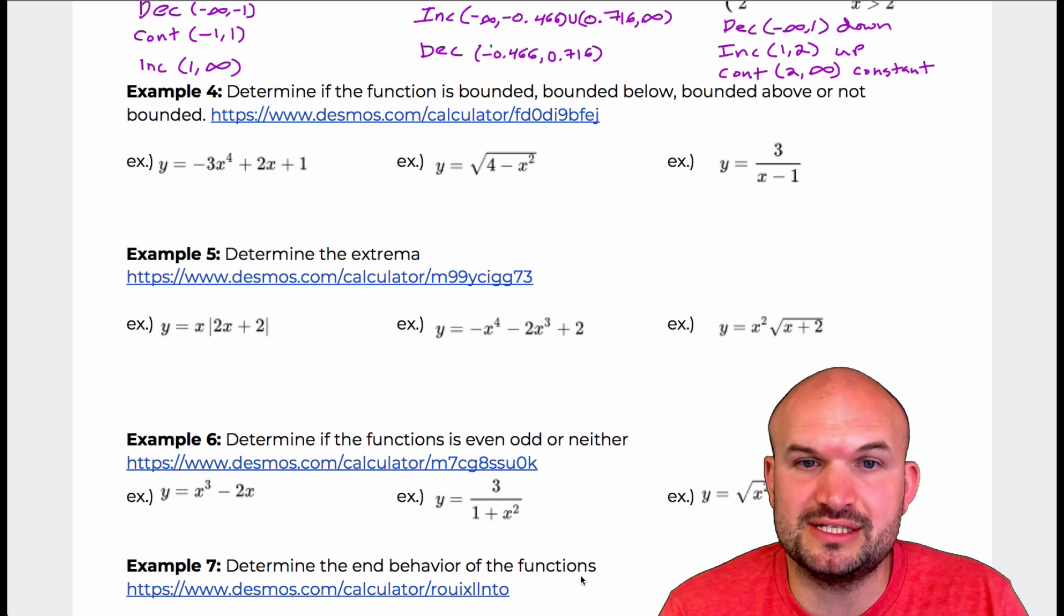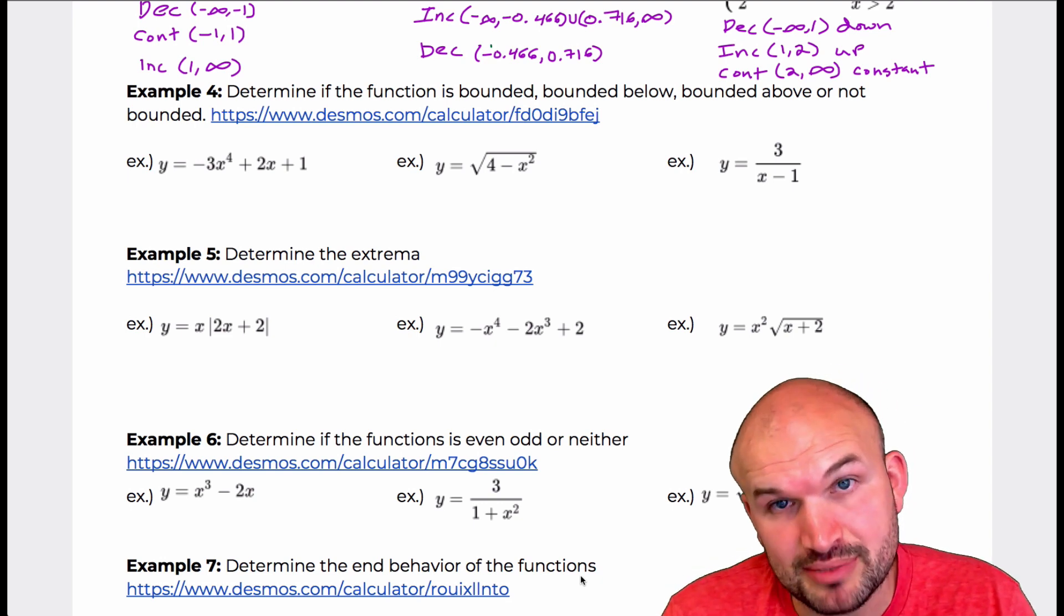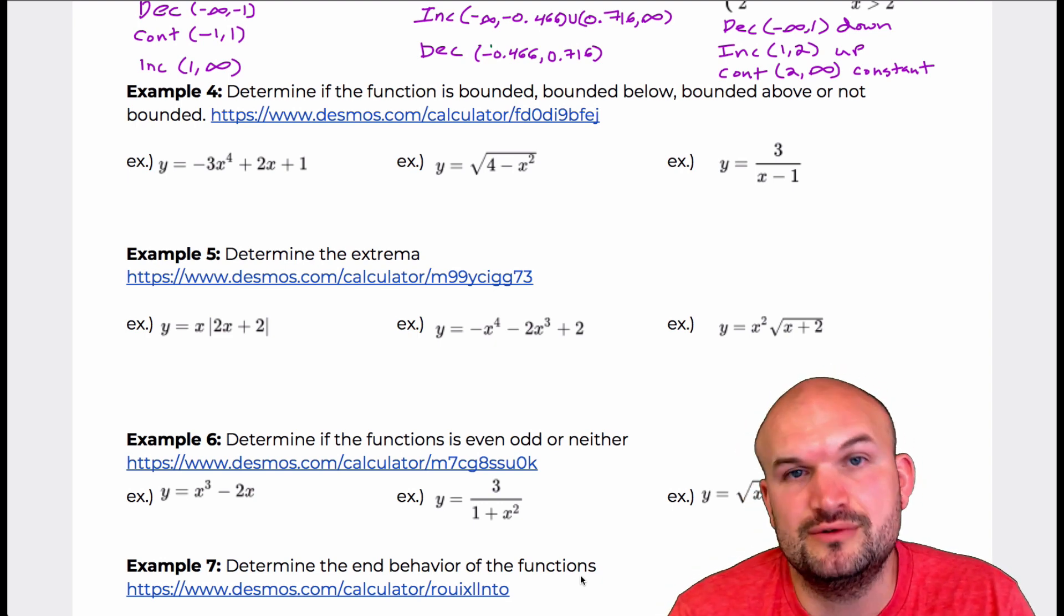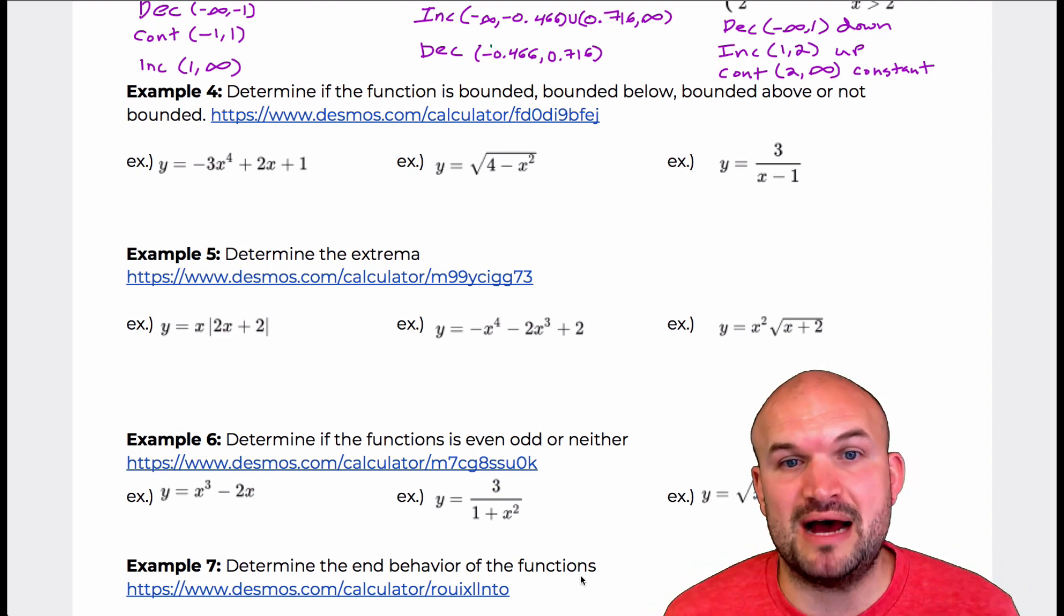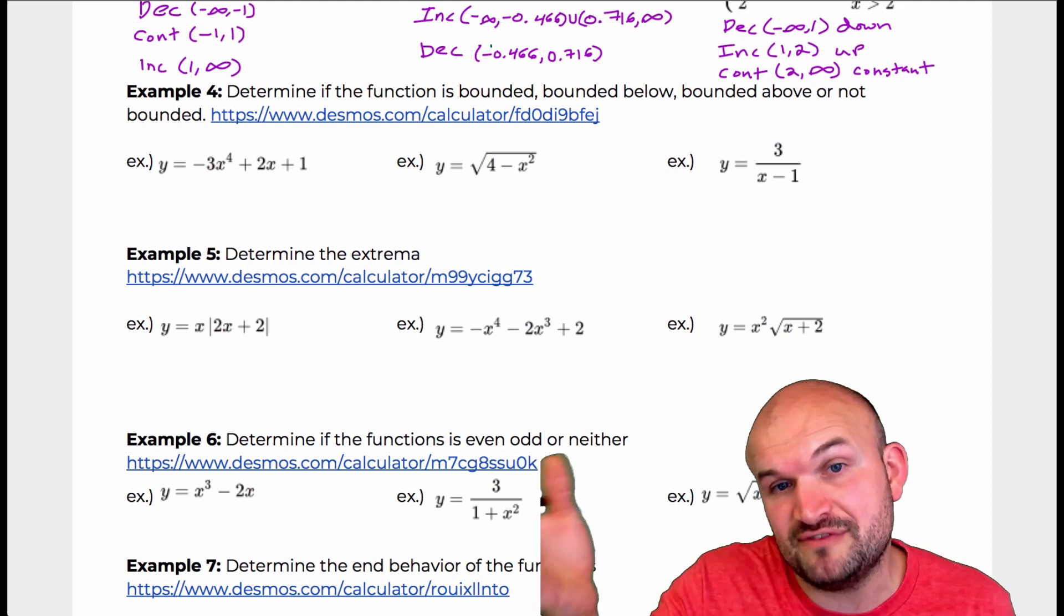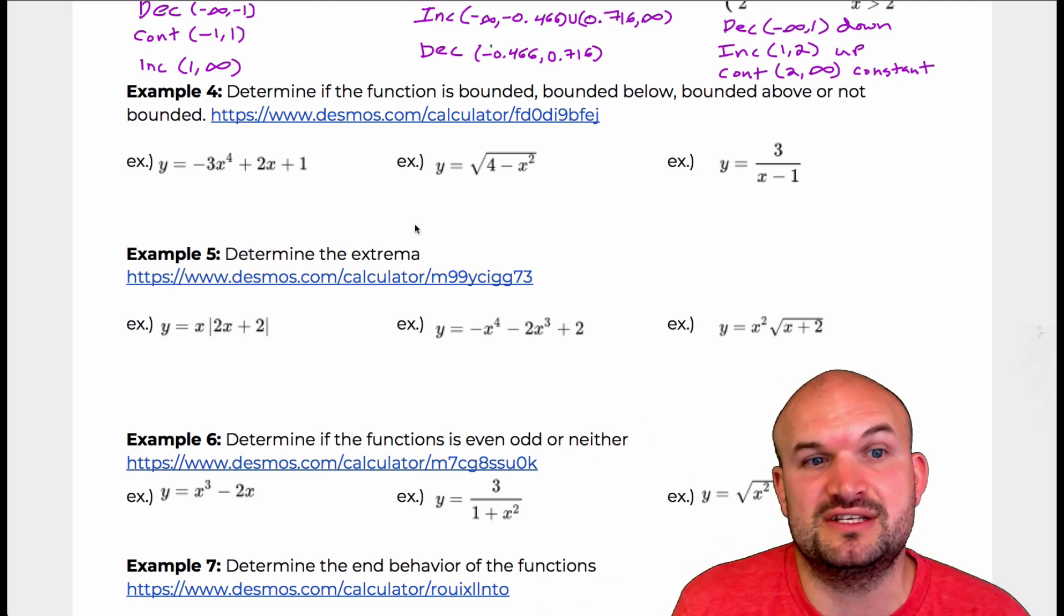If it's bounded below, that means the graph is not going to be going below a given minimum value, so your graph would have an absolute min. And a graph bounded on the top and the bottom we just call bounded, and if it continues to infinity and negative infinity, then the graph is unbounded.